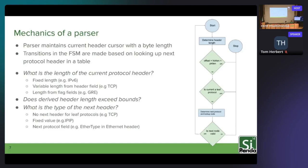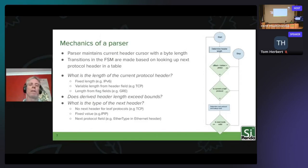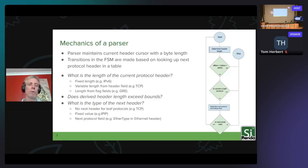Once we know the header length, the next critical question is: is this header length valid? If I start from the current offset and add the length, does that exceed the length of the packet? If parsing an IPv4 packet and the computed length would go beyond the packet length, we cannot continue — we can't parse that header because it's incomplete. This check is performed constantly at every protocol, and optimizing how we do length checking is one of the things we want to address.